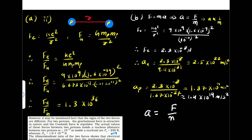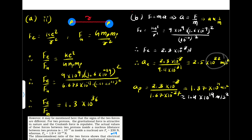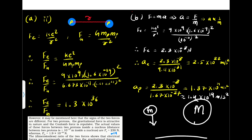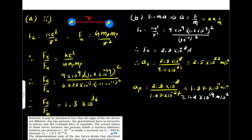The acceleration of the electron is larger because it has smaller mass. In electrostatic force, the acceleration of the particle with smaller mass is greater, and the acceleration of the particle with larger mass is smaller. This contrasts with gravitational acceleration: if two objects of different masses fall toward Earth, both experience the same acceleration g = 9.8 m/s², which does not depend on the mass of the falling body. But in electrostatic force, the acceleration does depend on mass.